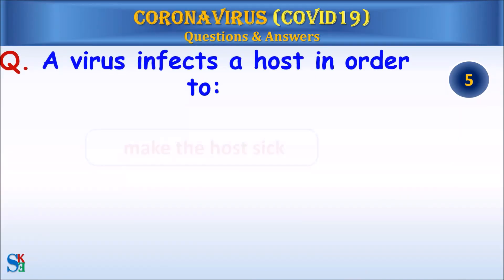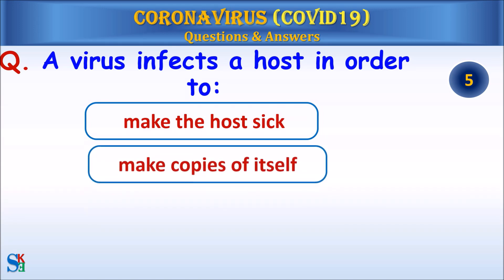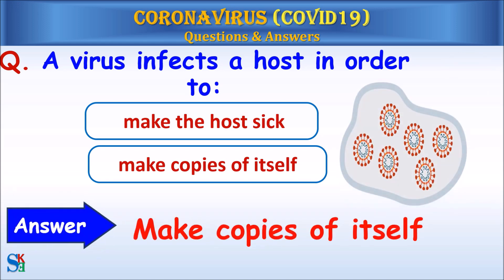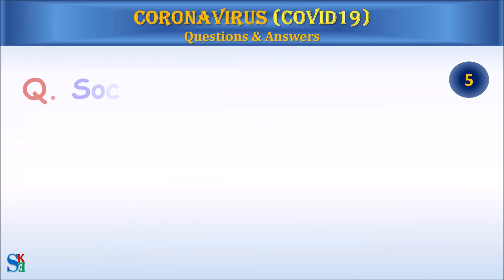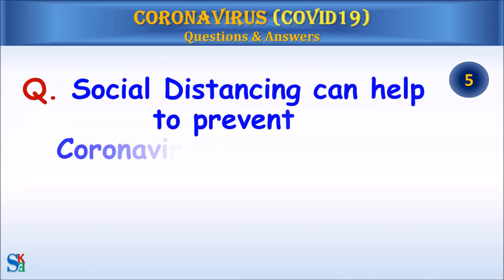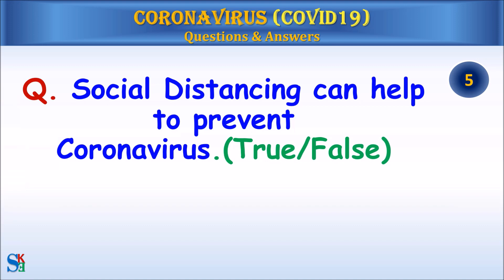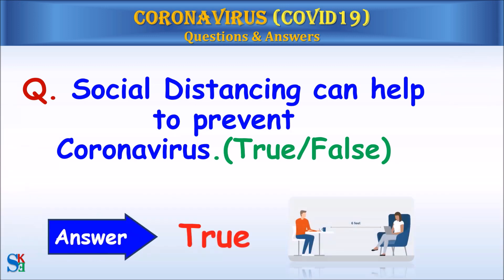Question: A virus infects a host in order to make the host sick or make copies of itself? Answer: Make copies of itself. Question: Social distancing can help to prevent coronavirus — true or false? Answer: True.